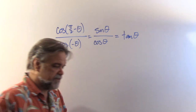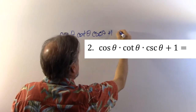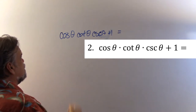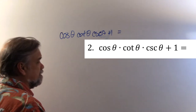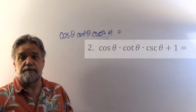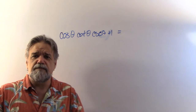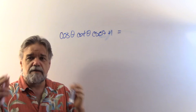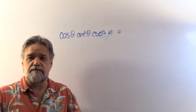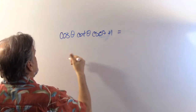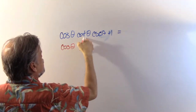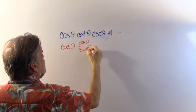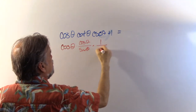Let's take a look at number two. Number two tells us cosine of theta times the cotangent of theta times the cosecant of theta plus one. When I see things like this, I think to myself, let me get everything in terms of sines and cosines. Cosine is just cosine. Cotangent is cosine divided by sine. And cosecant is one divided by sine.